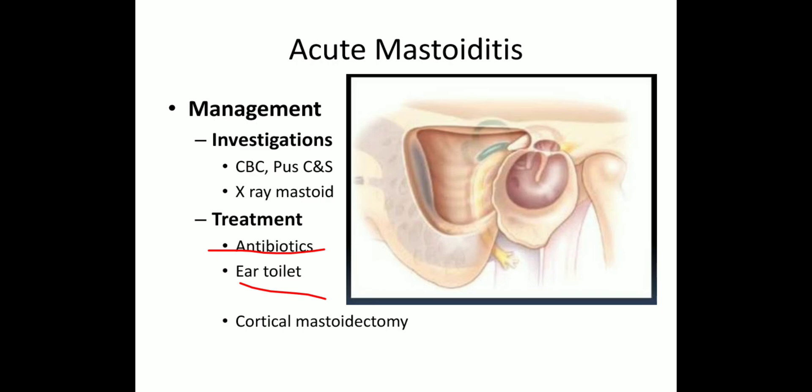In some textbooks, myringotomy is given as treatment for mastoiditis. This is misleading — myringotomy may be done if the membrane is bulging with pus in acute otitis media, but it is not indicated for mastoiditis. If conservative treatment fails, if there is no change in the patient's condition, if subperiosteal abscess is present, or if there is sagging of the posterior superior meatal wall or a reservoir sign, then we have to go for surgical management — cortical mastoidectomy, which exenterates all accessible mastoid air cells and removes the pus.